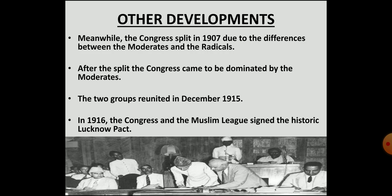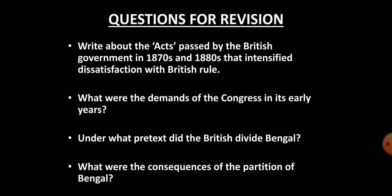For the remaining part, remember to watch the next video of this chapter. Till then, solve these questions. First: Write about the acts passed by the British government in the 1870s and 1880s that intensified dissatisfaction with British rule. Second: What were the demands of the Congress in its early years? Third: Under what pretext did the British divide Bengal? Fourth: What were the consequences of the partition of Bengal?